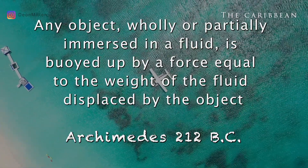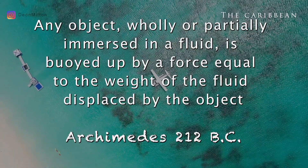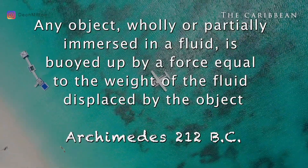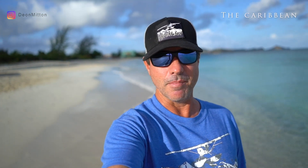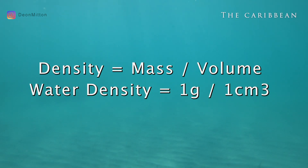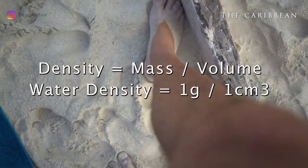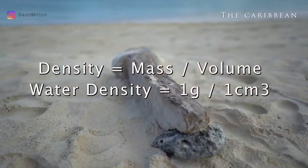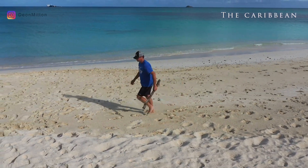To understand the concept of buoyancy, scientists have defined density as the equation that helps describe how dense an object is. It's simply defined as the mass divided by the volume of any object — density equals mass divided by volume. For water, we know that one cubic centimeter of water weighs one gram, so the density of water is one.